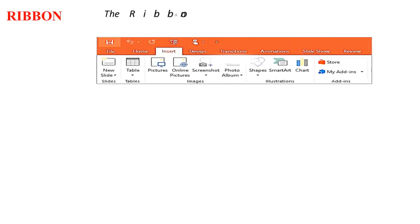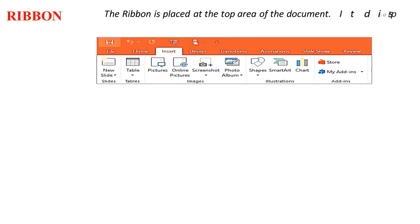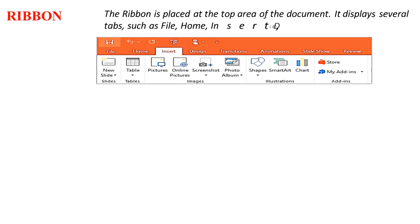Ribbon: The Ribbon is placed at the top area of the document. It displays several tabs, such as File, Home, Insert, Design, etc.